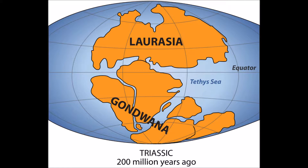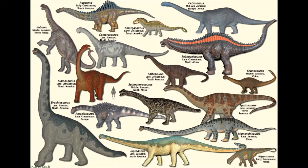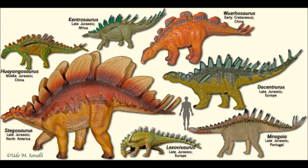200 million years ago the Jurassic period began. This is where Pangea split into Laurasia and Gondorana. During this time the first birds appeared and dinosaurs diversified. Some common animals were sauropods, stegosaurus, and pterosaurs.